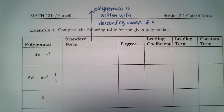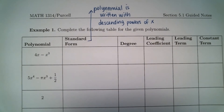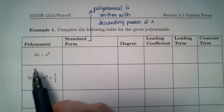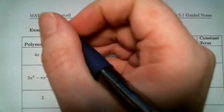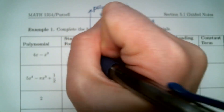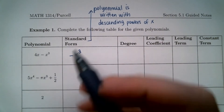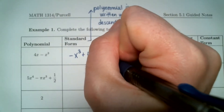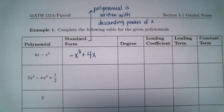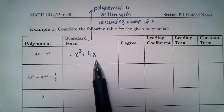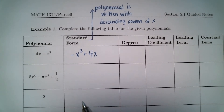When you look at this polynomial, it is not in standard form because the powers of x go up. The first term is 4x (x is raised to the first power), and the second term is negative x cubed. To write it in standard form, we rearrange it: negative x cubed plus 4x. It's the same polynomial, just rearranged so the powers of x descend from left to right.